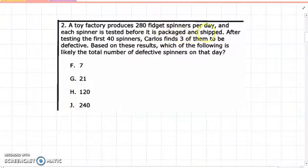Number two: A toy factory produces 280 fidget spinners per day, and each spinner is tested before it is packaged and shipped. After testing the first 40 spinners, Carlos finds three of them to be defective. Based on these results, the question is likely asking the total spinners or how many of the total spinners were defective. Well, he tested 40, and of those, Carlos found three of them were defective. So the total is 40 and three would be defective.